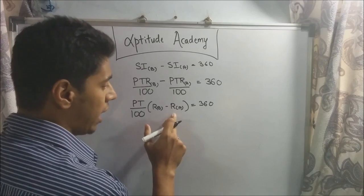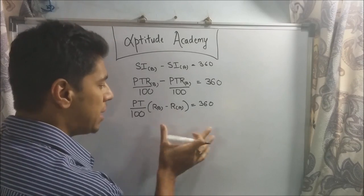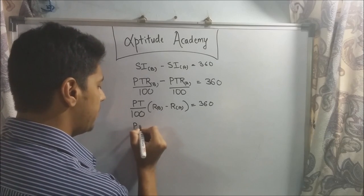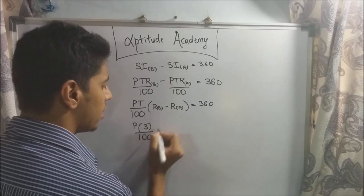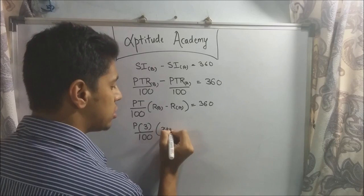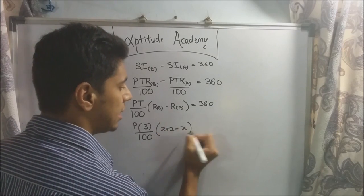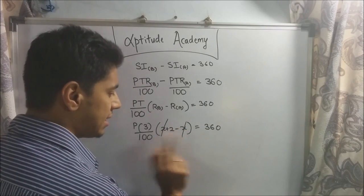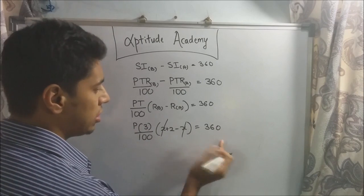Now, we know that R of A was X percent. And this is X plus 2 percent. Basically, this was 2 percent more than this. So if you write it down, it's P. Time also we know. Time was three years divided by 100 into what is B. Rate of B was X plus 2 and rate of A was X. So minus X equals 360. Now here, plus X minus X gets cancelled. So you just have P into 3 into 2 divided by 100 equals 360.